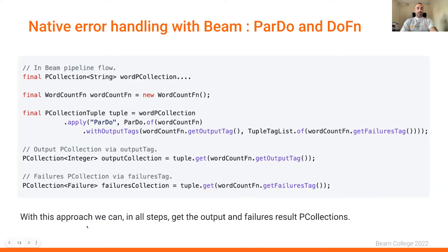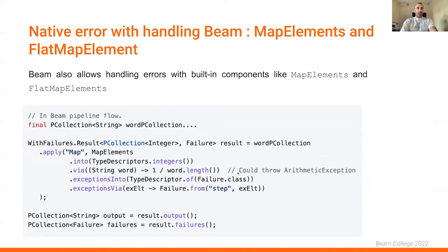I'm going to talk about native MapElements and FlatMapElements proposed by Apache Beam. With native elements, we can deal with errors via the exceptionInto method and the exceptionVia method. In exceptionInto, we give the precision of the current output failure class. If an error occurs behind the scene, Apache Beam catches the error for us and gives us an ExceptionElement object containing the input element and the current occurred exception. After this, we have access to a result structure from which we can get the output PCollection and the failure PCollection.